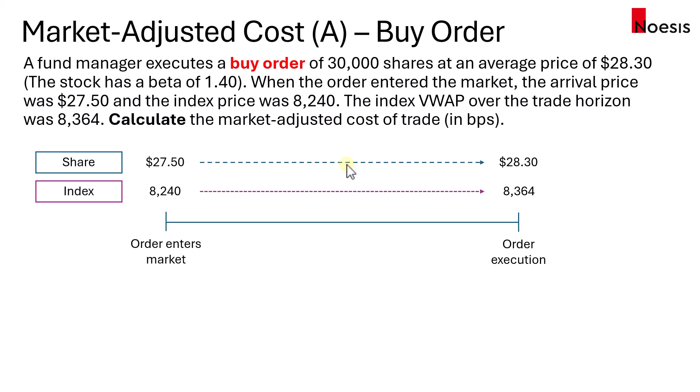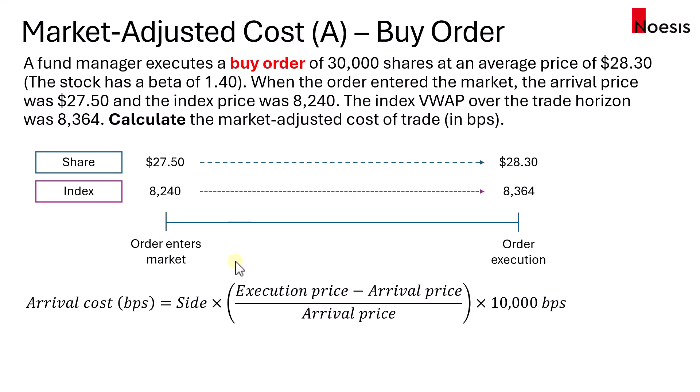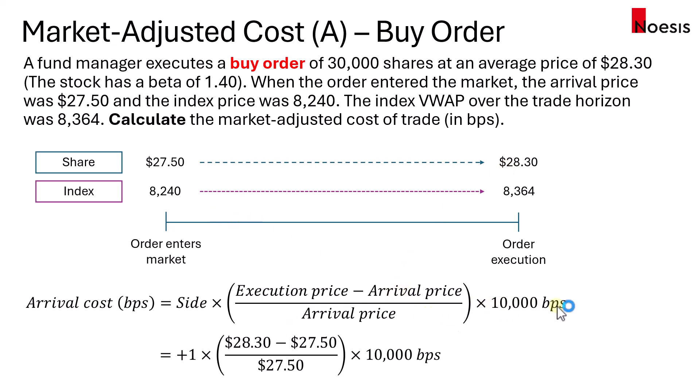We will first start by calculating the arrival cost, which is the side multiplied by the execution price minus the arrival price over the arrival price, then multiplied by 10,000 basis points. The side will be positive 1 because this is a buy order, and substituting the numbers in, we get 290.91 basis points. When you have a positive arrival cost, it means the trader actually underperformed in terms of execution, because they bought at a much higher price compared to the arrival price. This could be due to market volatility or a poor choice of algorithm in terms of execution.